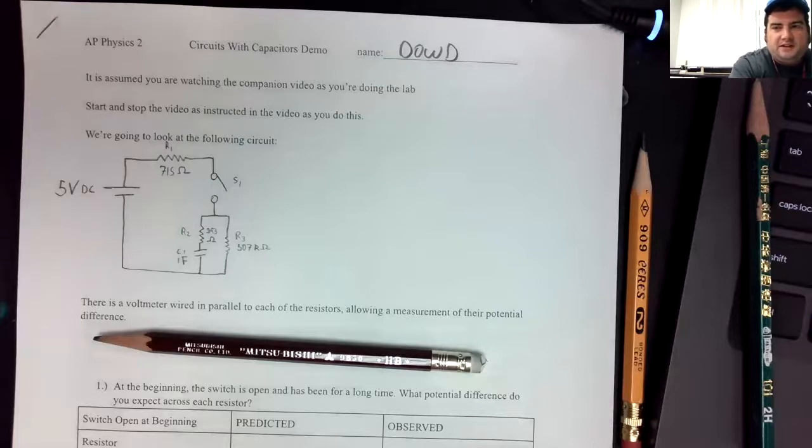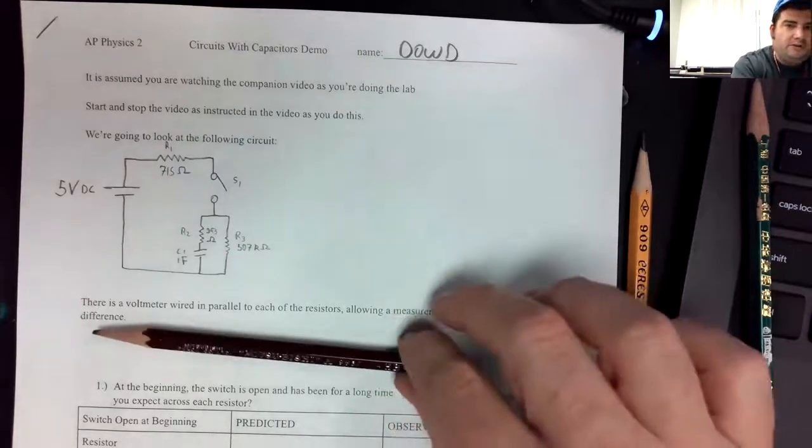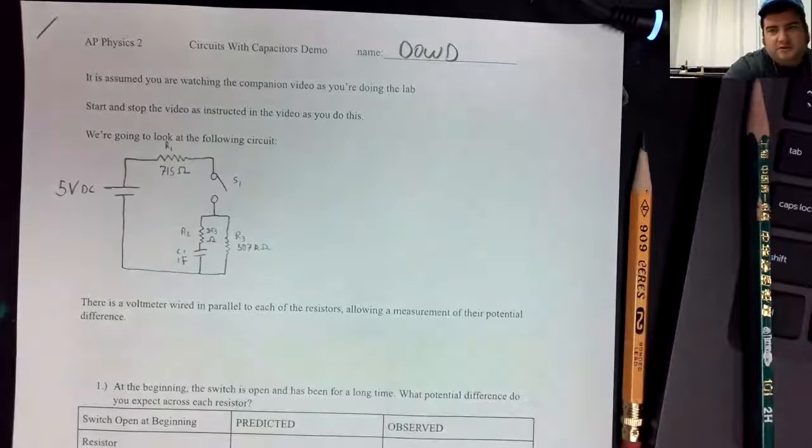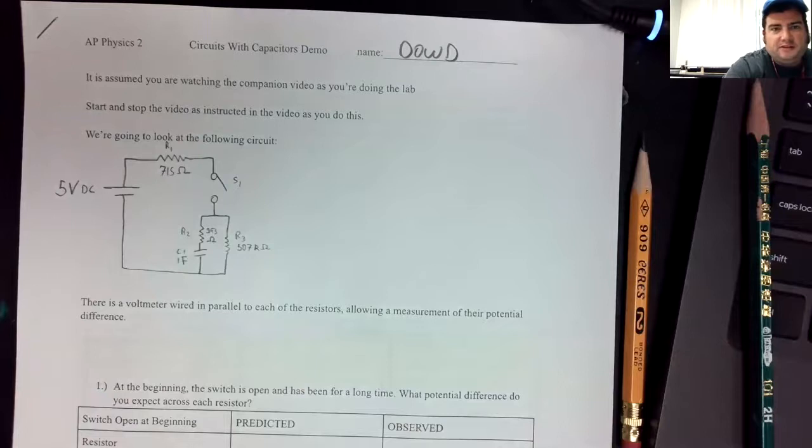So the key thing to understand is that as a capacitor charges, at the very beginning when the plates are neutral, it's easy to take charge off of one plate and put it on the other plate. The capacitor acts basically like a bare wire.